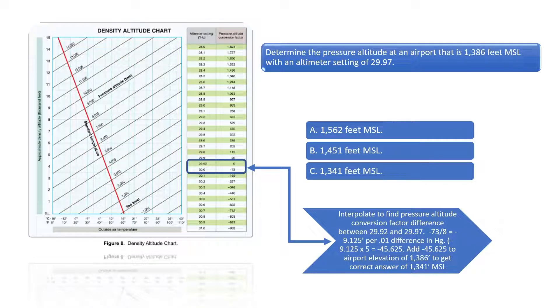The pressure altitude conversion factor decreases by roughly 9 feet for every 100th increase in the altimeter setting. We then need to multiply negative 9 by 5, since 5 is the difference between the altimeter settings of 29.97 and the standard altimeter setting of 29.92. We then subtract roughly 45 feet from the airport elevation of 1,386 feet MSL to get the correct pressure altitude of 1,341 feet MSL.